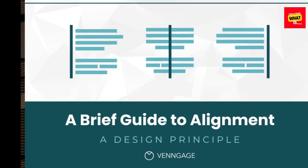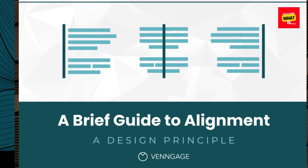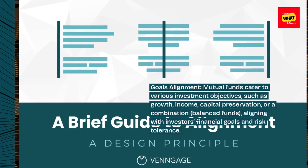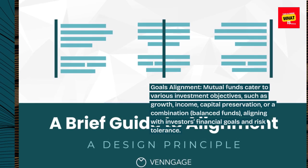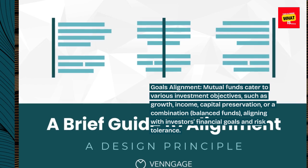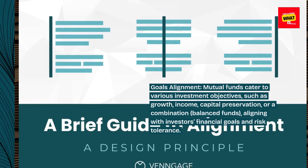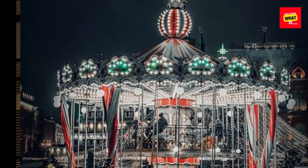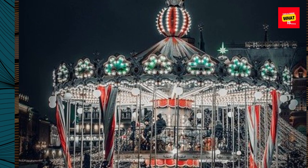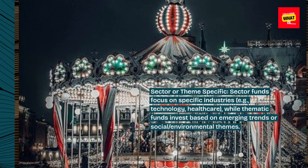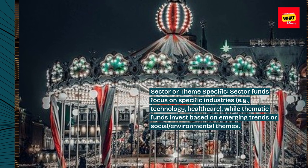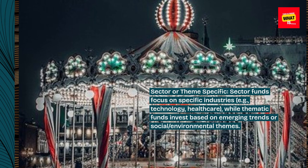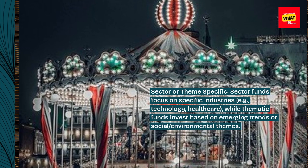Variety of investment objectives: Mutual funds cater to various investment objectives such as growth, income, capital preservation, or a combination through balanced funds, aligning with investors' financial goals and risk tolerance. Sector funds focus on specific industries, e.g., technology and healthcare, while thematic funds invest based on emerging trends or social and environmental themes.